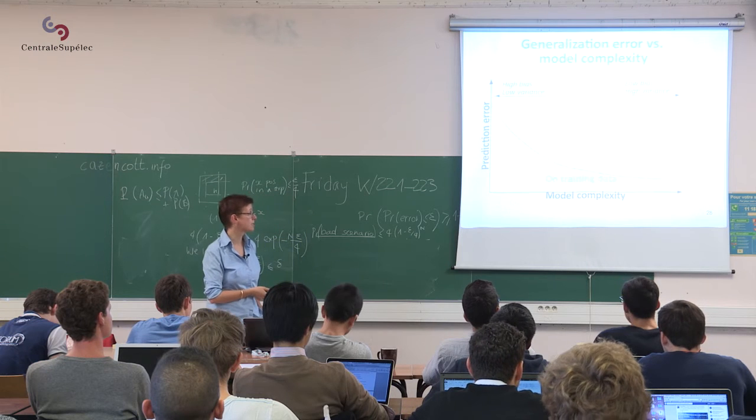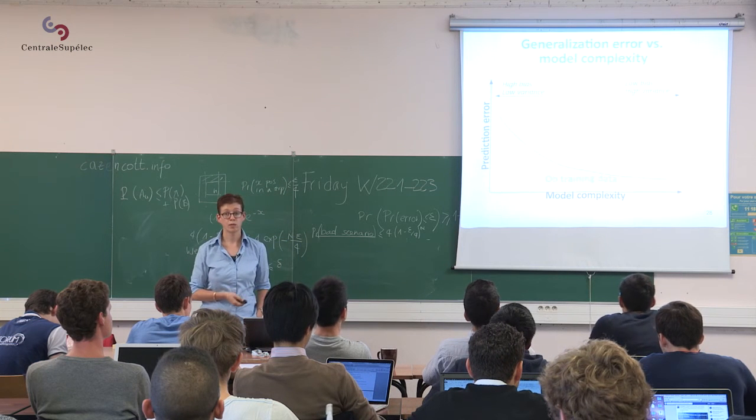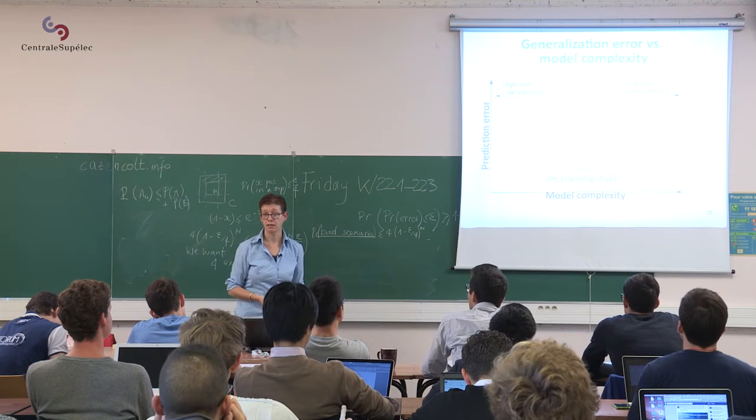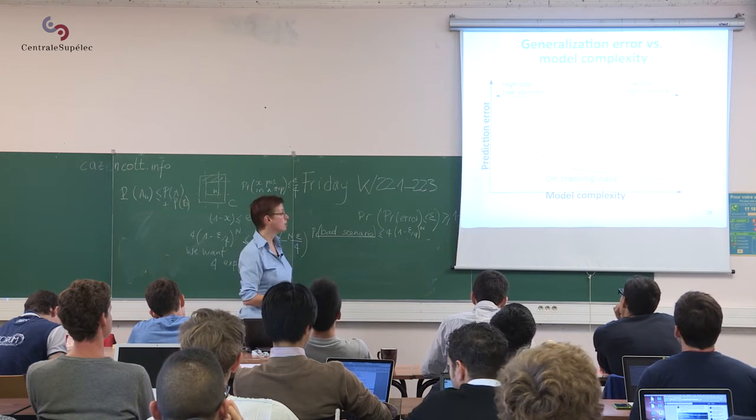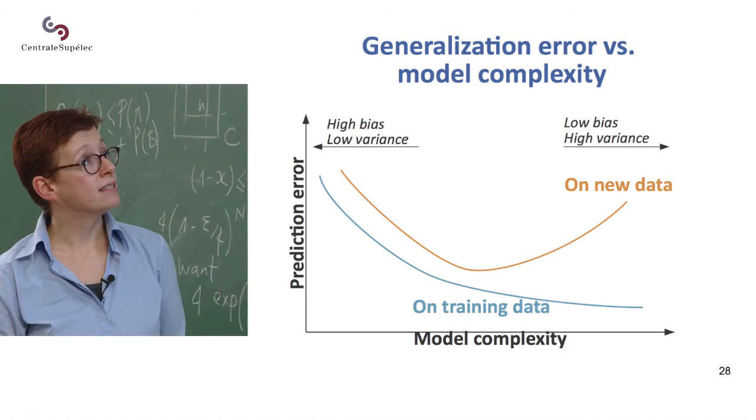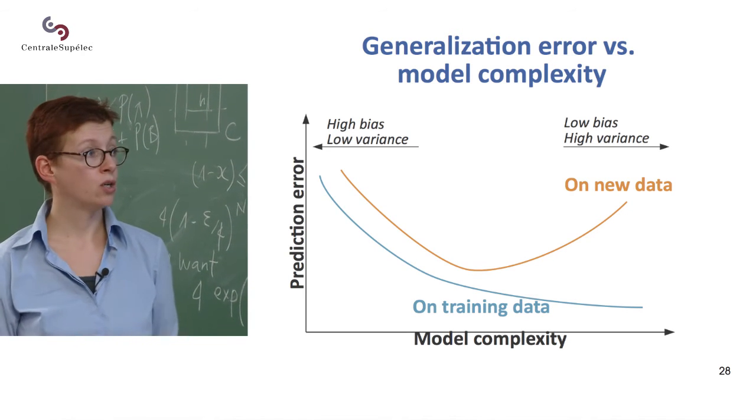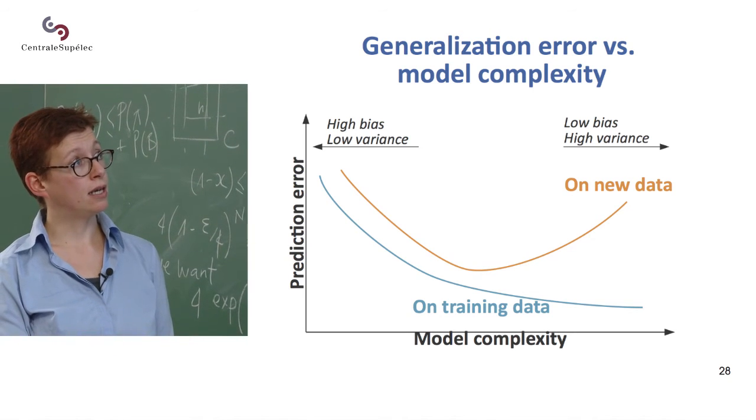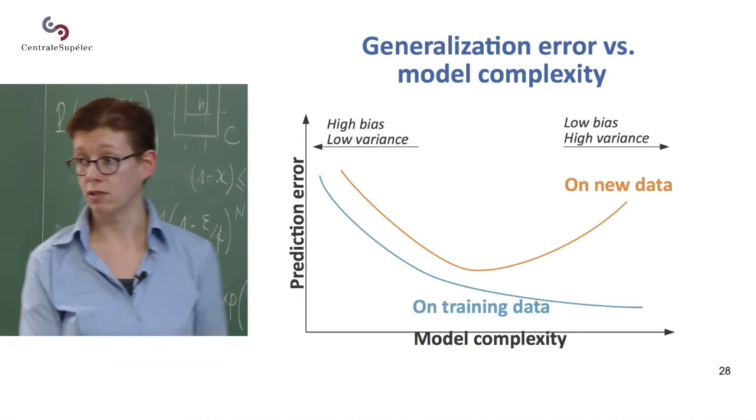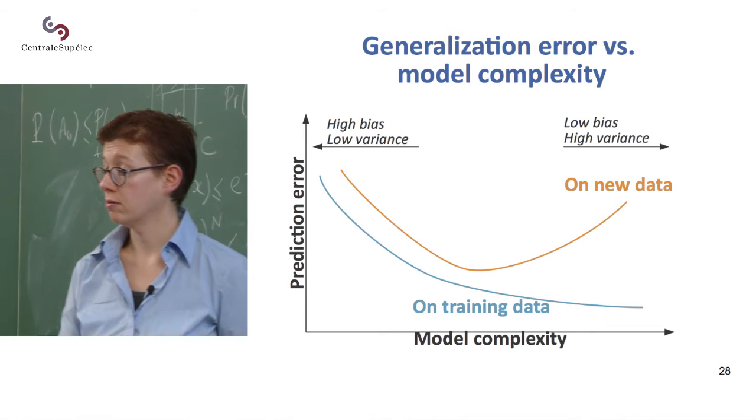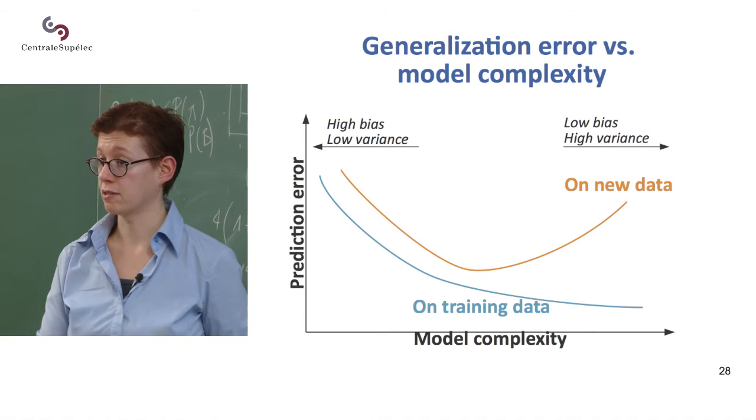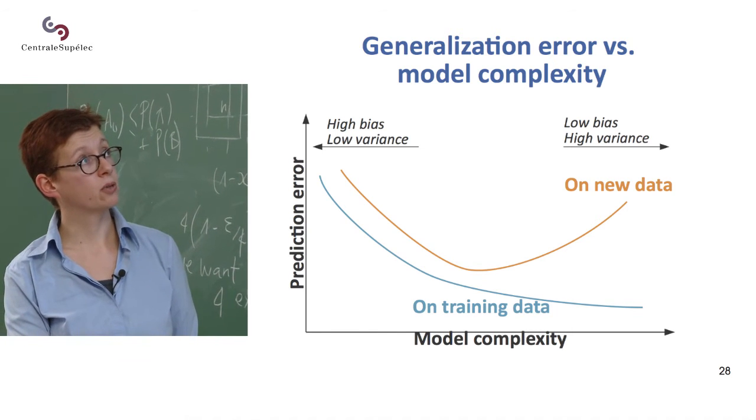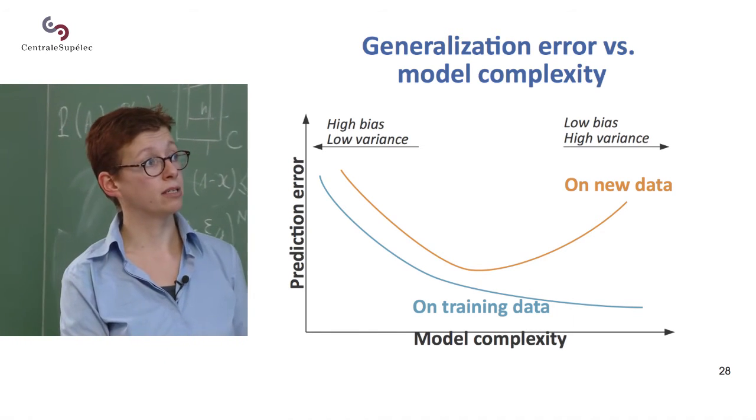Again, I told you that complex models were fitting the training data very well, but not applying very well to new data. And this is an important diagram to remember. So if you increase your model complexity, your error on the training data will get lower. So this was what this whole overfitting was about. And so you'll get towards a high variance but low bias.